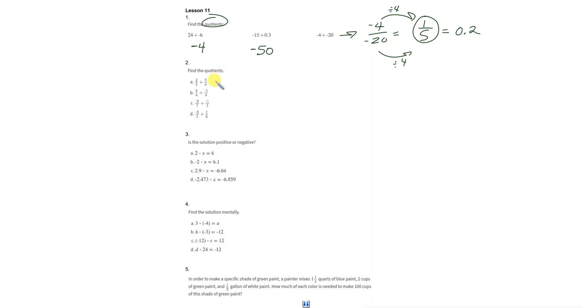Alright, finding quotients. If we're finding quotients like this, we are going back to our sweet rule of keep, change, flip. So, I'll do A right over here. Keep. Change to multiplication. Flip to 4 thirds.